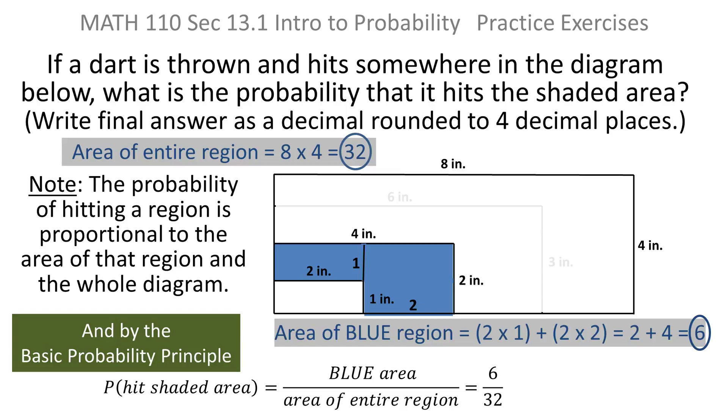So all that's really left to do, if you wanted to leave it as a fraction, is to divide both numerator and denominator by two, and you get 3/16. So if we were leaving the answer as a fraction, it would be 3/16. However, the problem actually said to do it as a decimal rounded to four decimal places, so we didn't have to reduce, but since it was so easy, I did. What we really need to do is either divide 6 by 32 or 3 by 16 to get 0.1875. So if you threw a dart at that entire area, the probability of hitting that blue shaded area to four decimal places would be 0.1875.